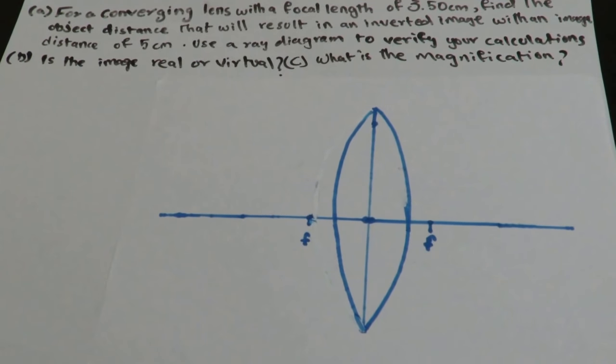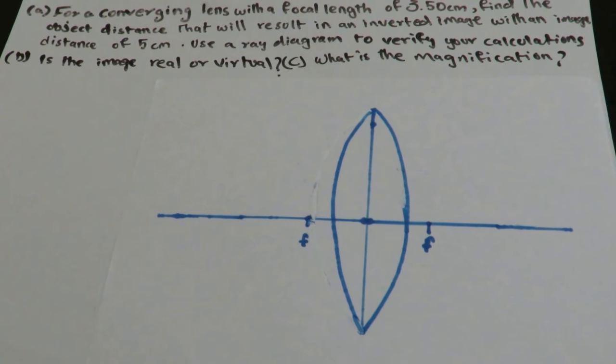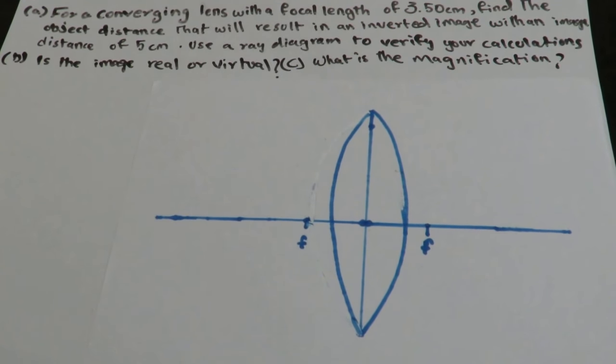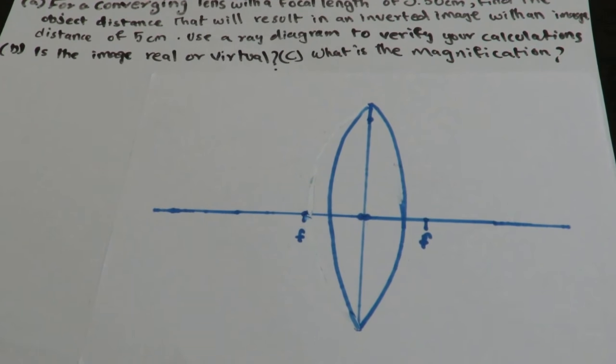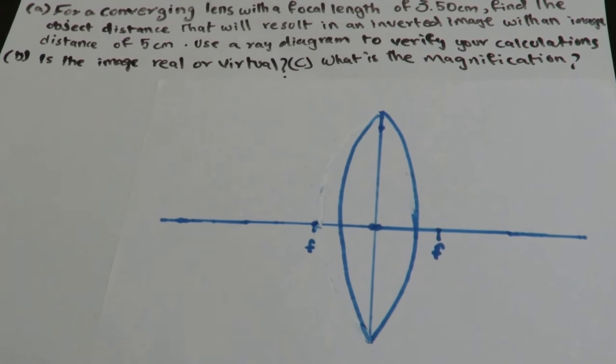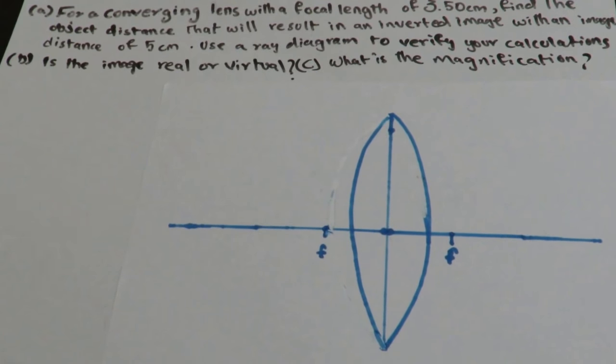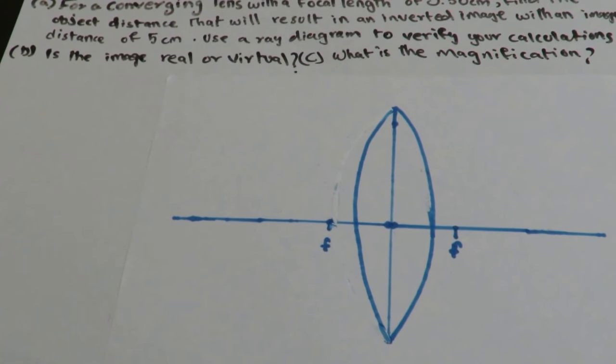for a converging lens with a focal length of 3.5 cm, find the object distance that will result in an inverted image with an image distance of 5 cm. Use a ray diagram to verify your calculations. B, is the image real or virtual? C, what is the magnification?